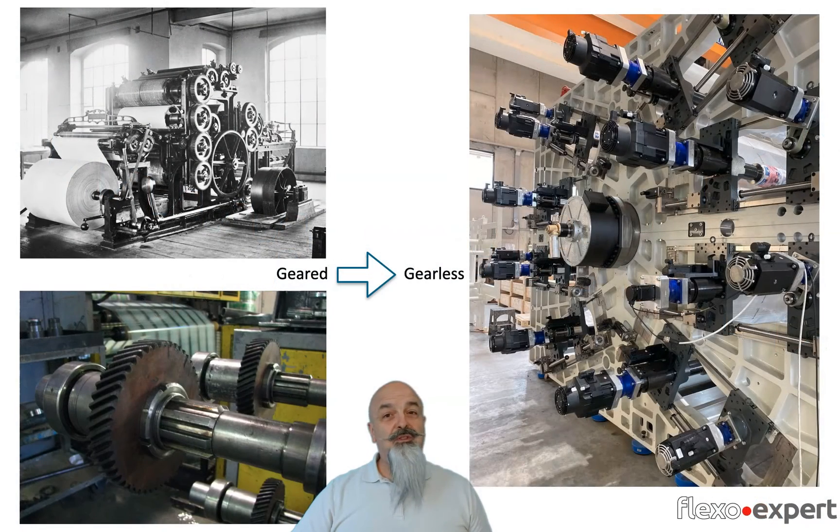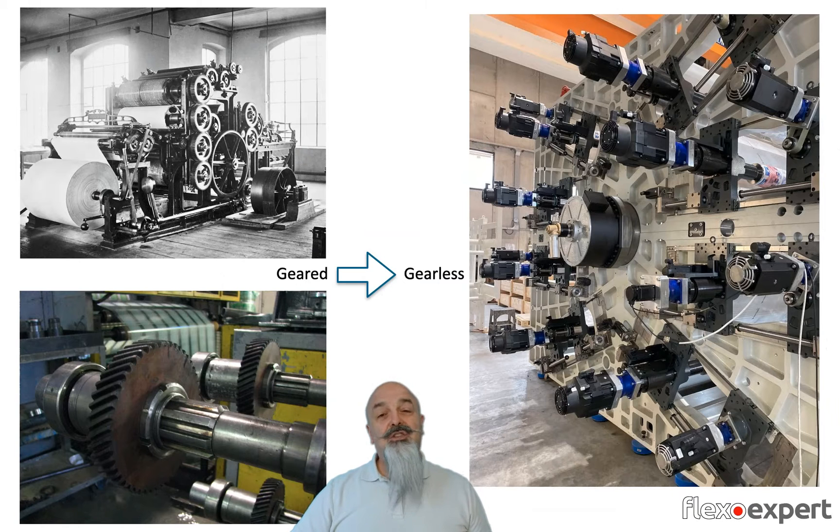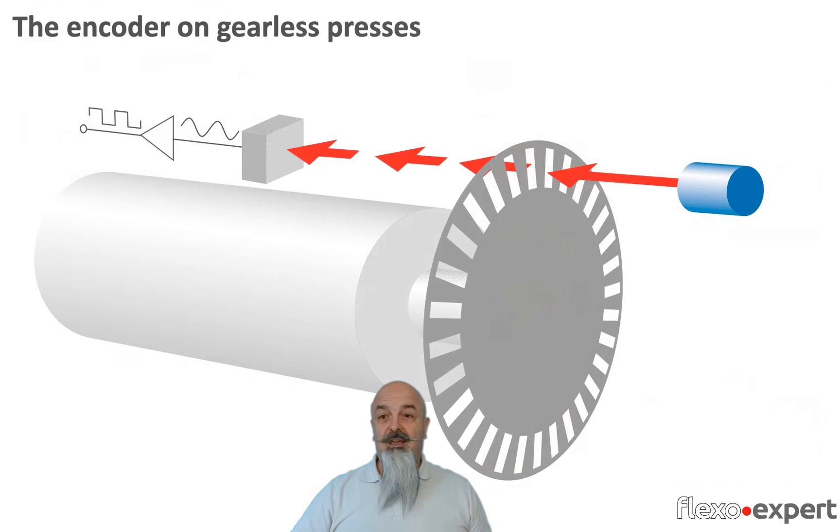Modern flexo printing presses today are built without gears, they are gearless. Each cylinder is driven by an independent motor, and in gearless presses, the rotation of the cylinder is controlled by encoders that adjust the movement and the spin.